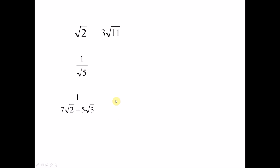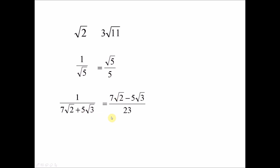We look at another example where the denominator is in a surd form. When this happens, we usually rewrite 1 over √5 so that the surd becomes the numerator — we move the surd from the denominator to the numerator. This process is called rationalization.